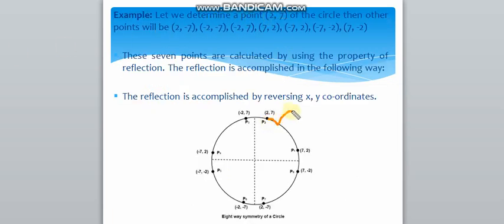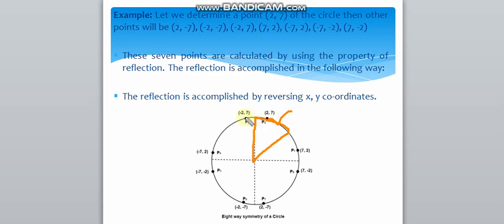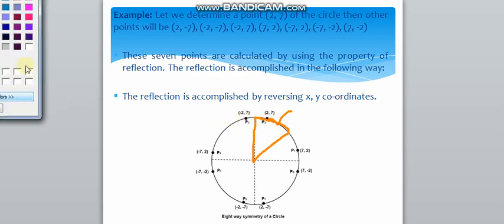Here we have the point (2, 7). Similarly, we have to determine all 8 points of this circle. We can determine all the 8 points of this circle, and in this circle we are having 5 points.